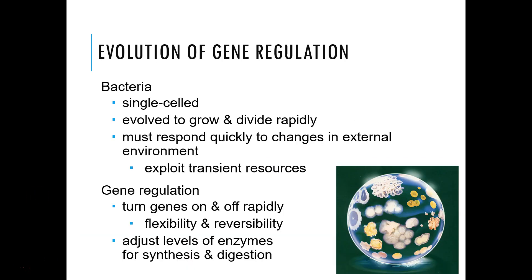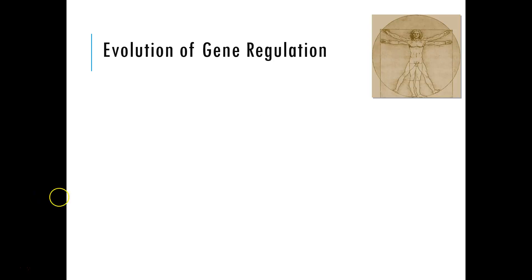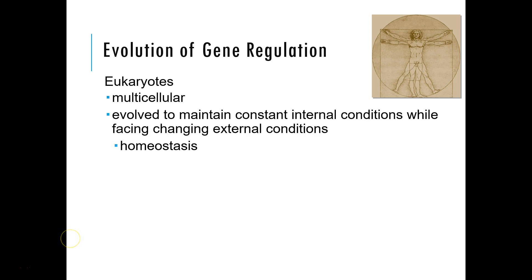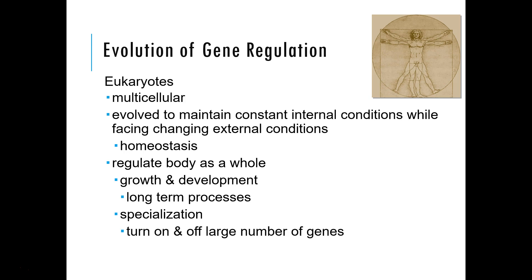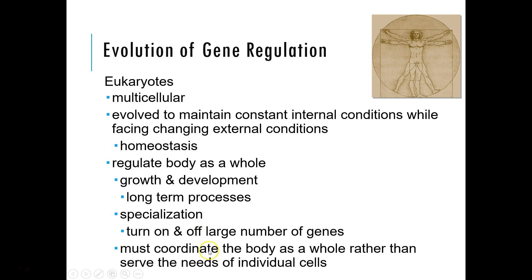While bacteria are single-celled and need to change their gene expression profiles very rapidly, eukaryotes by contrast are multicellular. We maintain a constant internal condition — homeostasis — and regulate the body as a whole. We grow and develop as cells specialize — these are long-term processes. We need to turn on and off large numbers of genes depending on the type of cell and the conditions, to coordinate the body as a whole rather than just the needs of individual cells.